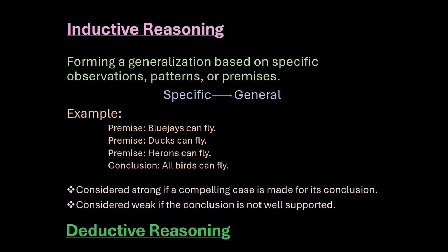Inductive reasoning is forming a generalization based on specific observations, patterns, or premises. You're going from specific examples to a general conclusion. For example, if you have the premises: blue jays can fly, ducks can fly, and herons can fly — those are all things that we can observe in the wild, things that we know to be true. Our conclusion that follows from that is that all birds can fly.